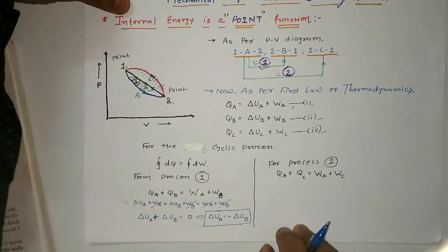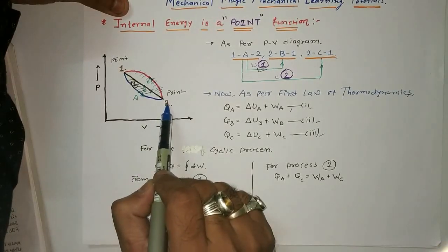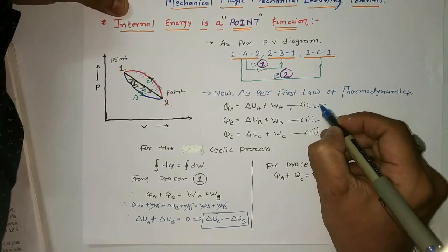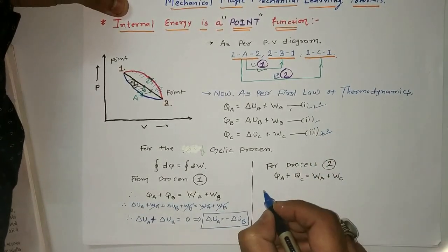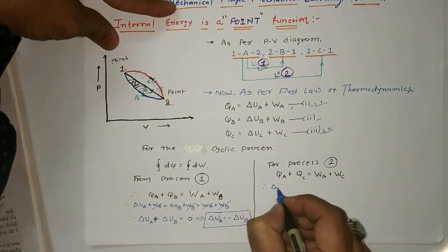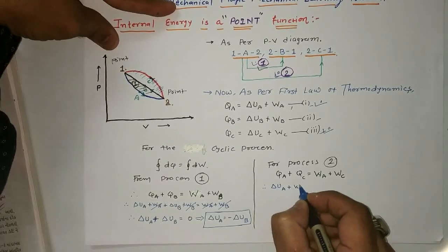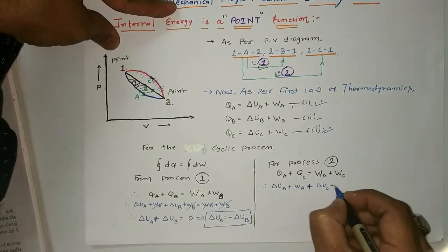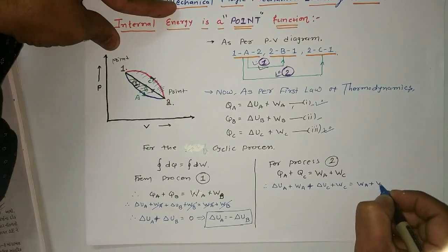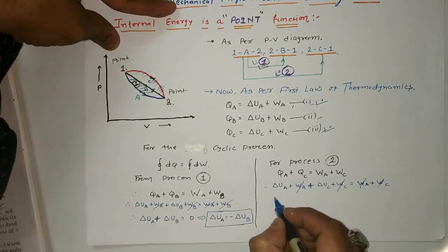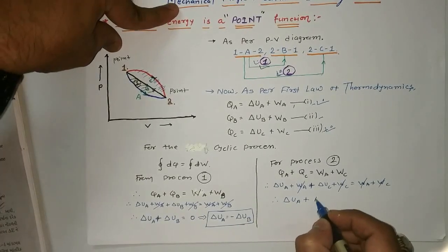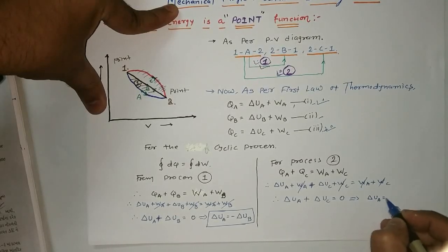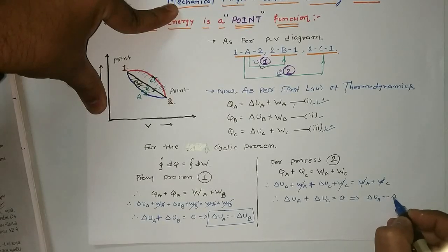Now applying the same to process 2, which occurs between 1a2 and 2c1. Using equations 1 and 3: ΔU_a + W_a = ΔU_c + W_c, which gives ΔU_a + ΔU_c = 0. Therefore ΔU_a = −ΔU_c.